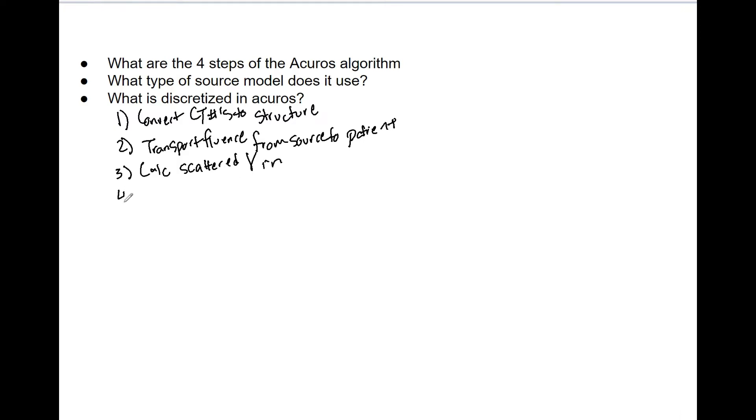And then we want to calc the scattered - and as you guessed it, when there's photons, there's going to be electrons deposited. So calc scattered electron fluence. I said four steps, but I'm going to add a fifth here - just do the dose calc.